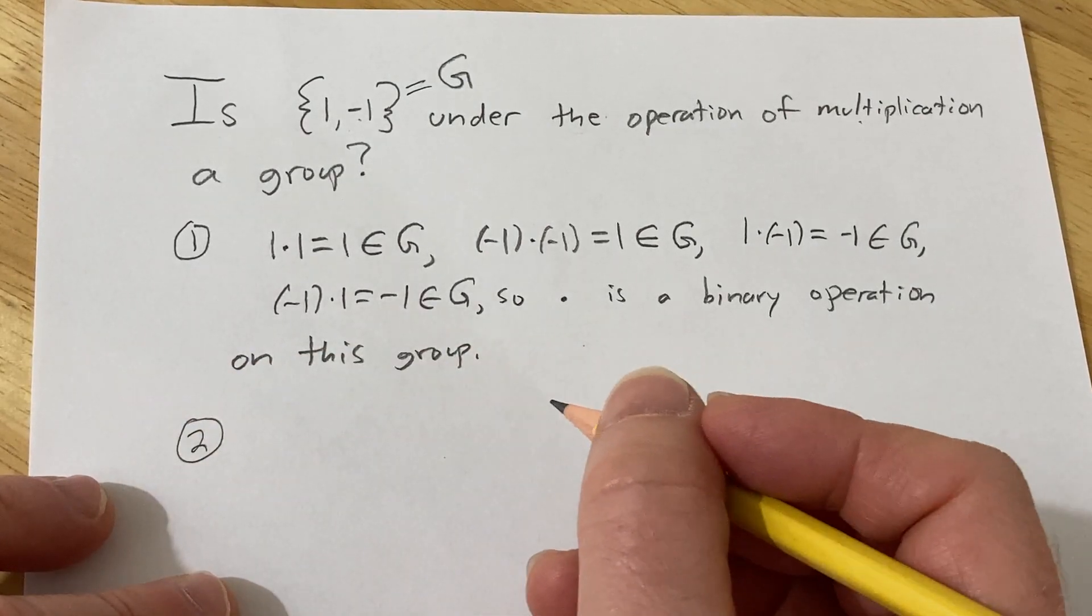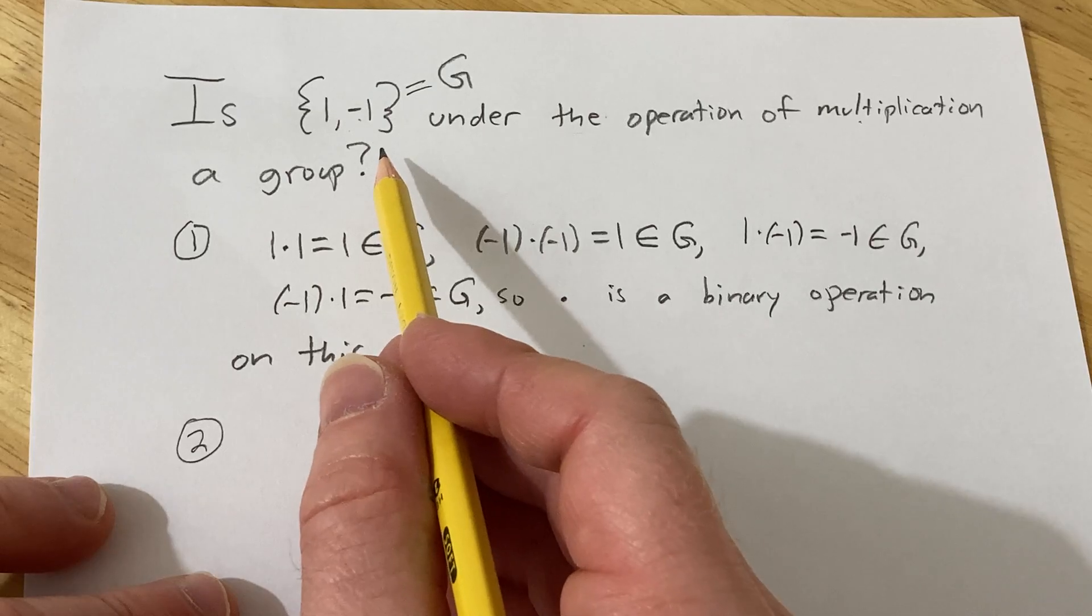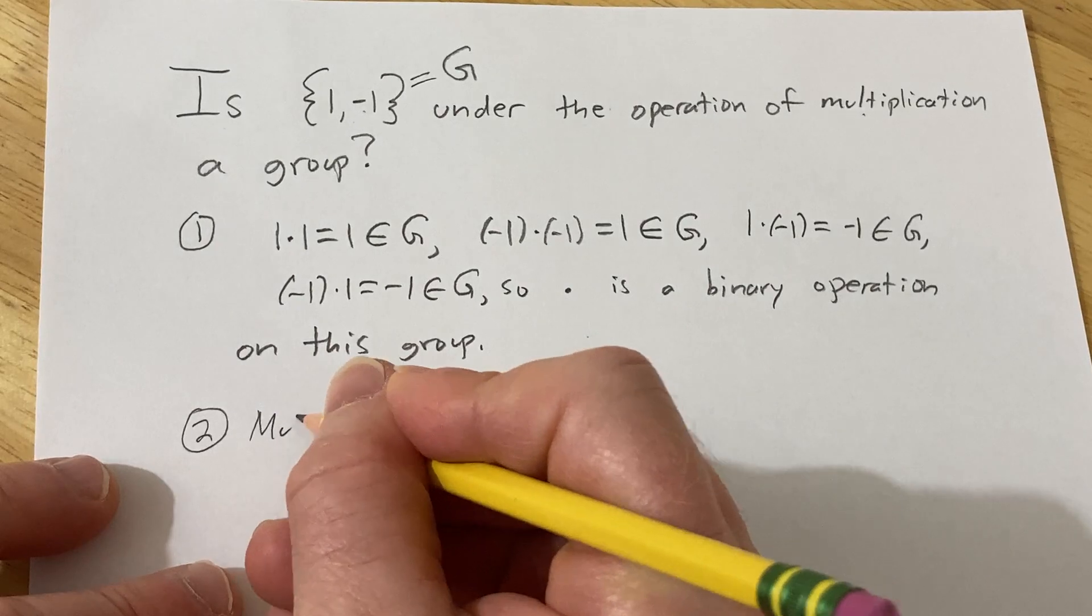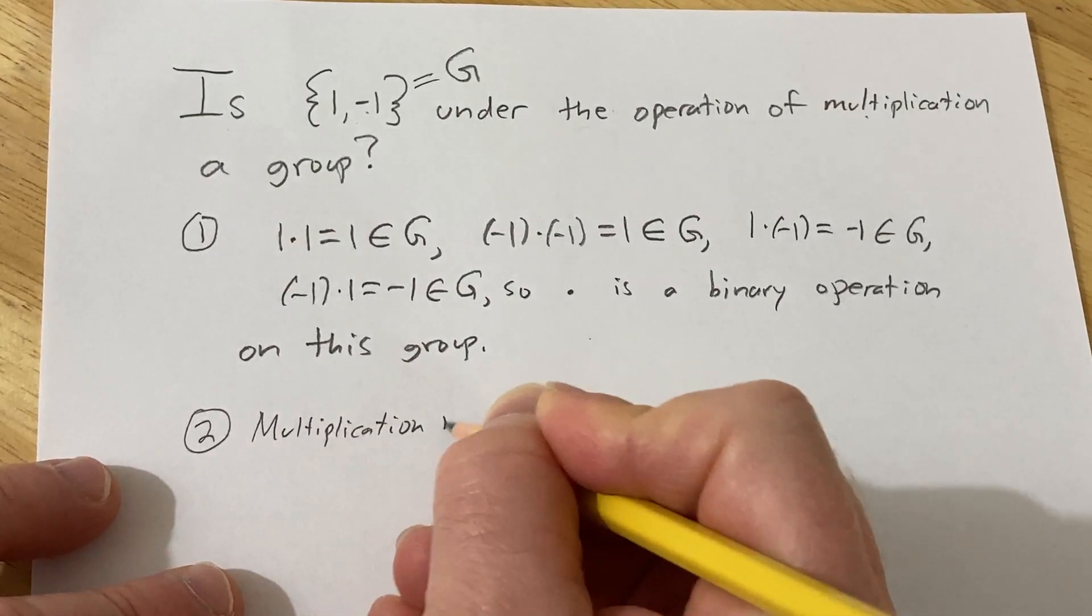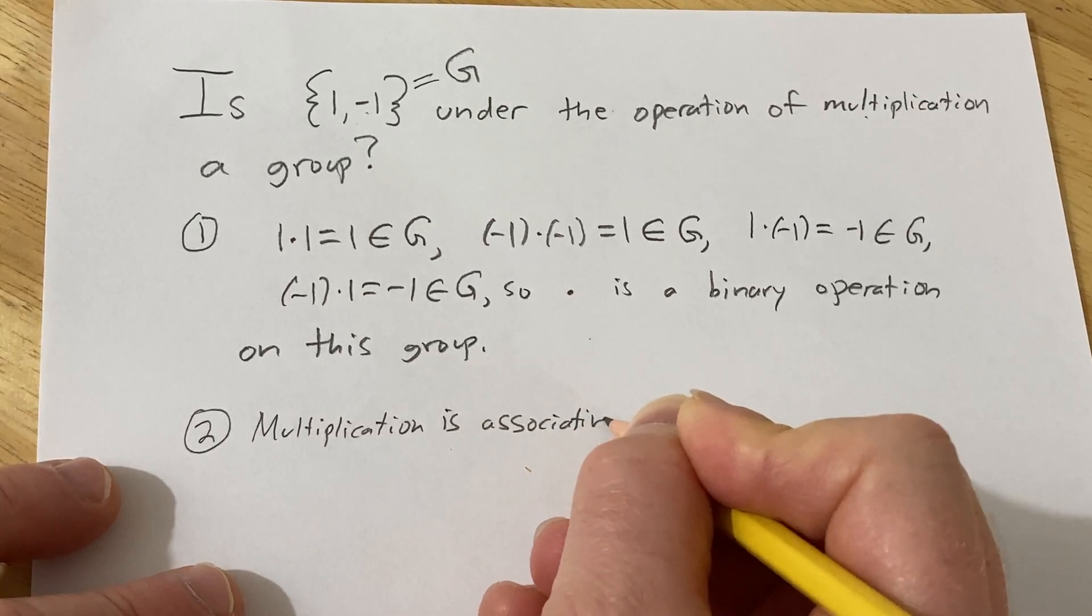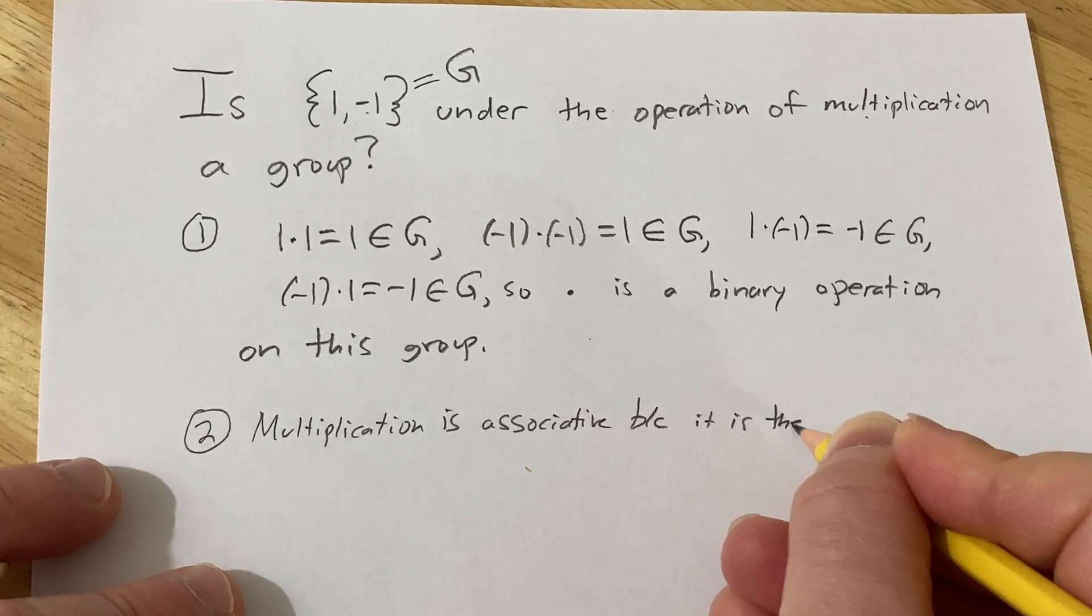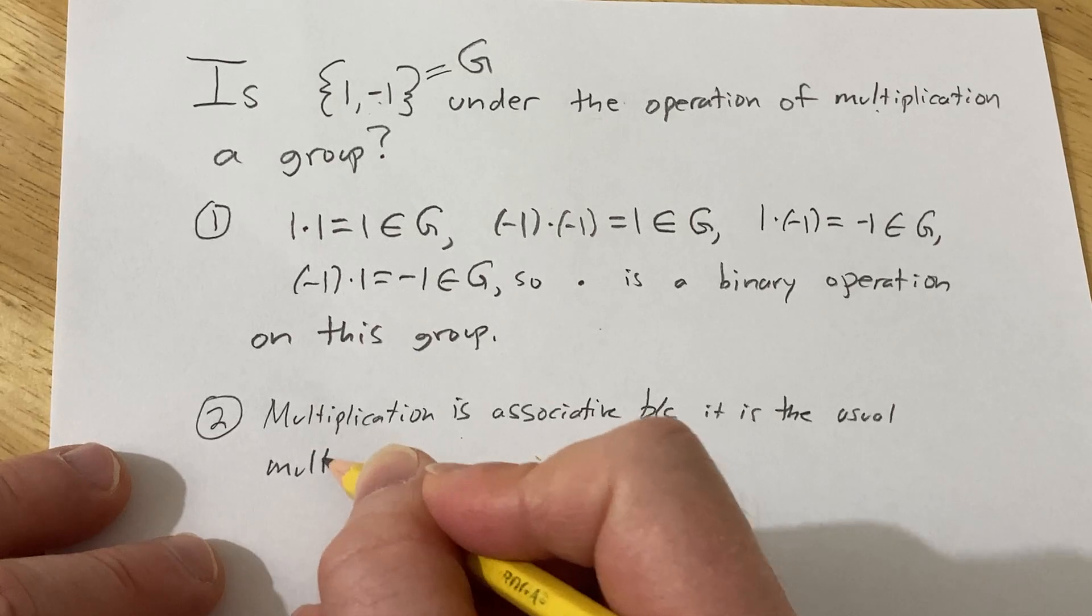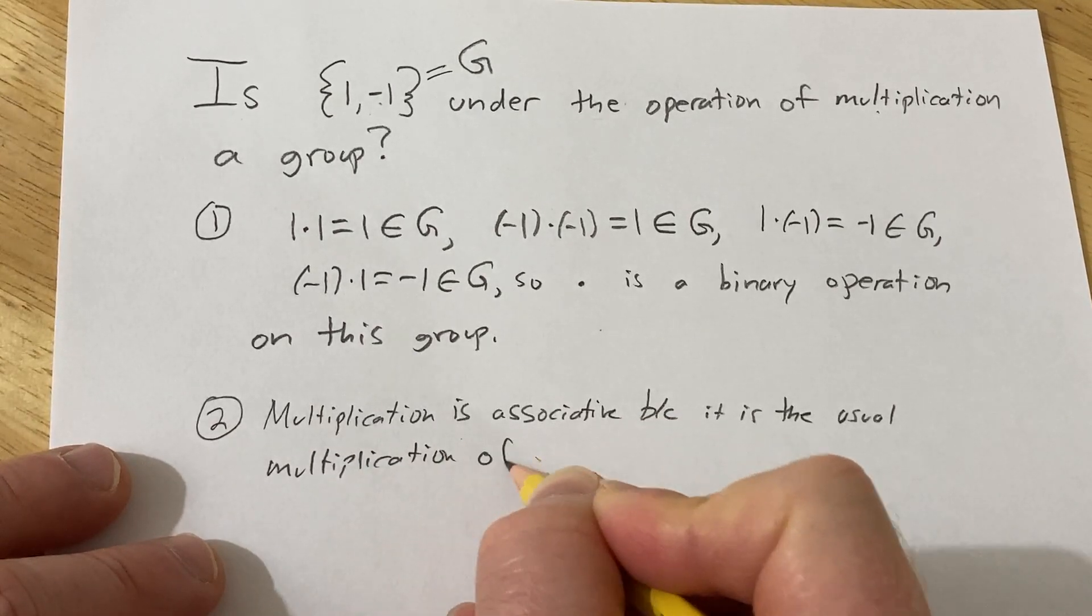Let's check associativity and basically the multiplication is associative because it's just the usual multiplication of real numbers. So I'll just say multiplication is associative because it is the usual multiplication of real numbers,